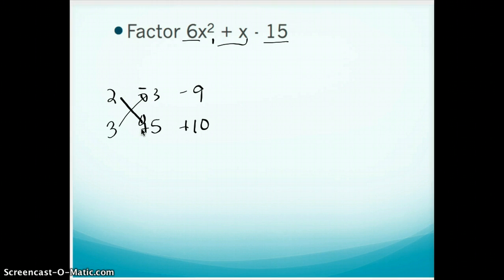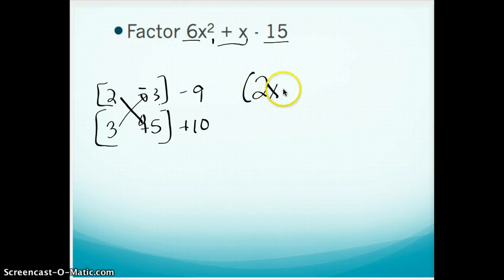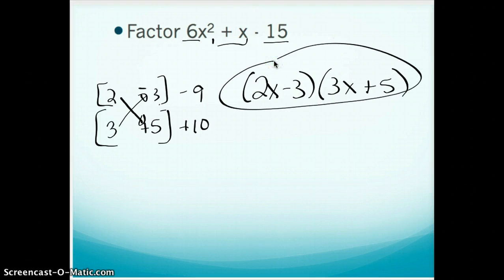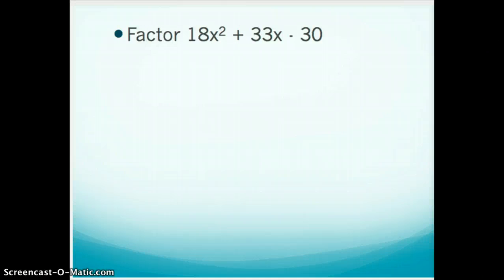To get that to happen, I'd have to do 3 times negative 3 and 2 times positive 5. So again, these will be my binomials. They'll be the coefficients of my binomials. Straight across, I should have 2x minus 3 times 3x plus 5. And we should be able to check that that simplifies to 6x squared plus x minus 15. See if you got it.